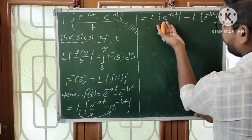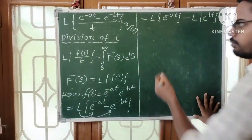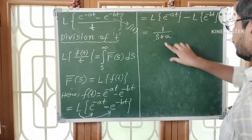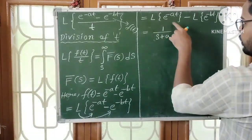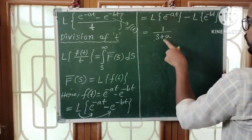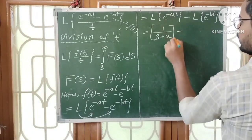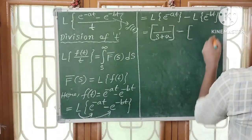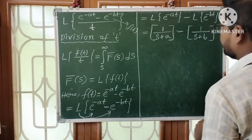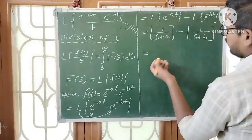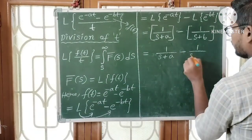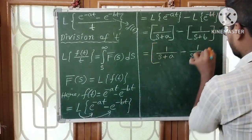The direct formula for L{e^(-at)} is 1/(s+a). Remember: for negative exponent -at, we get plus a in the denominator. So we get 1/(s+a) minus 1/(s+b), since the formula for L{e^(-bt)} is 1/(s+b). Therefore f̄(s) = 1/(s+a) - 1/(s+b).